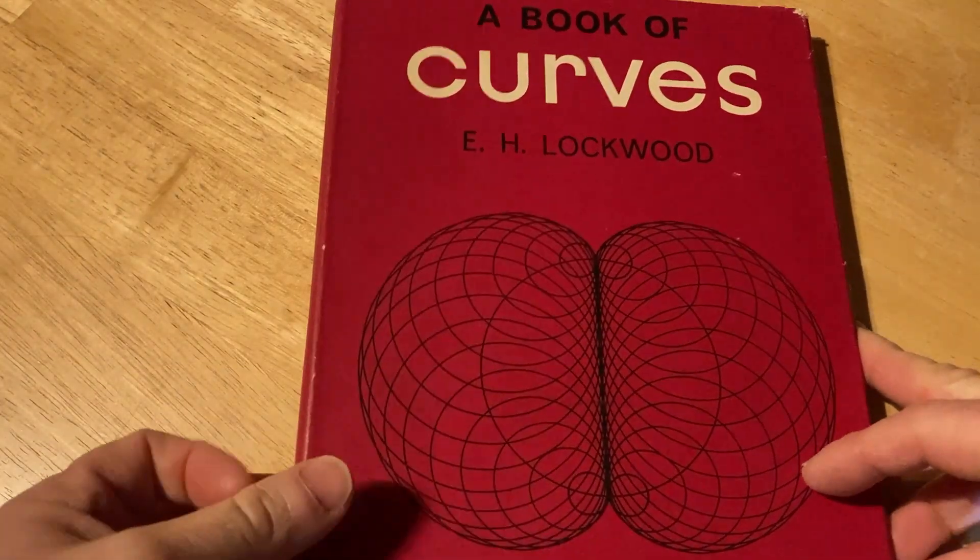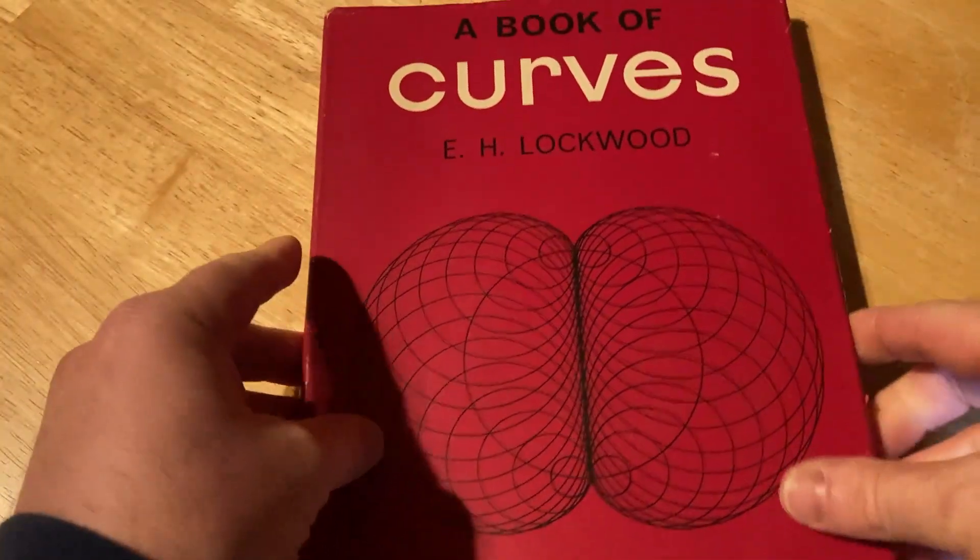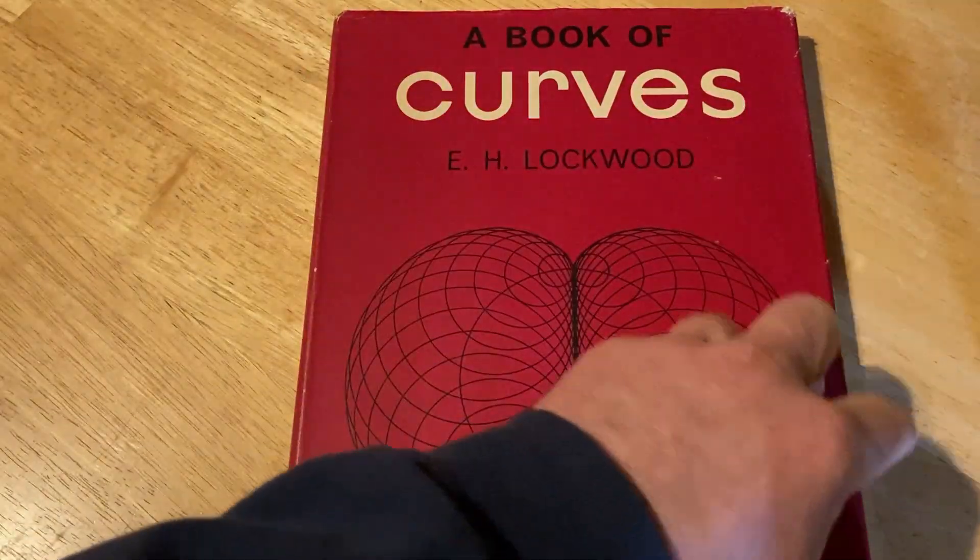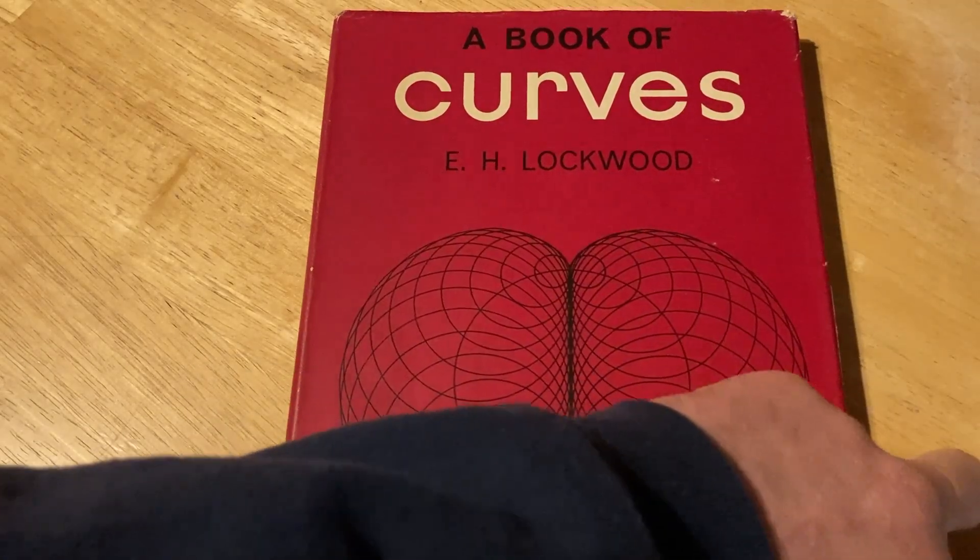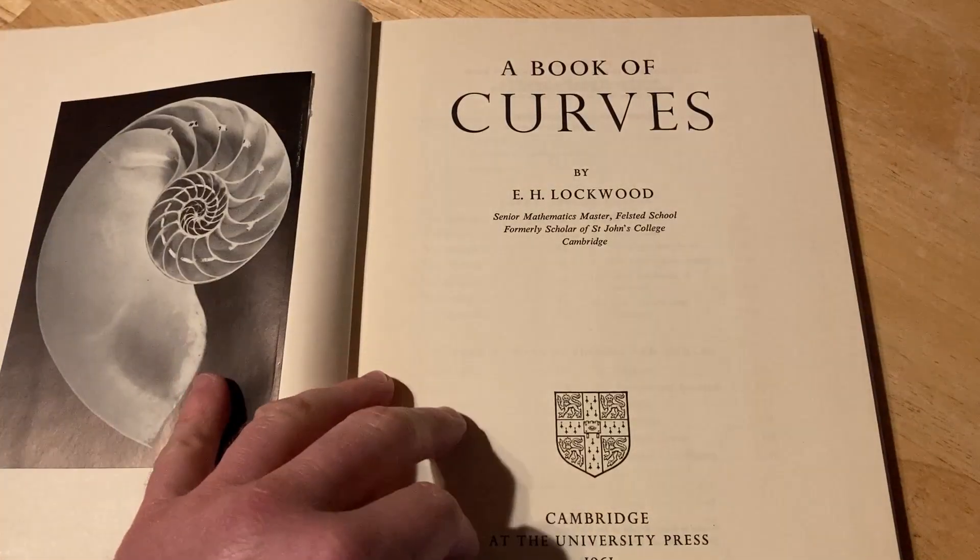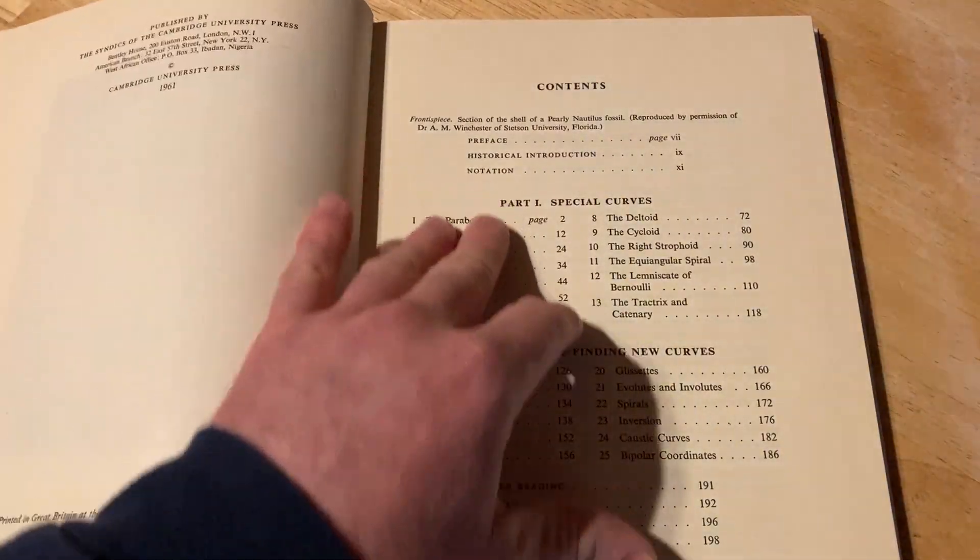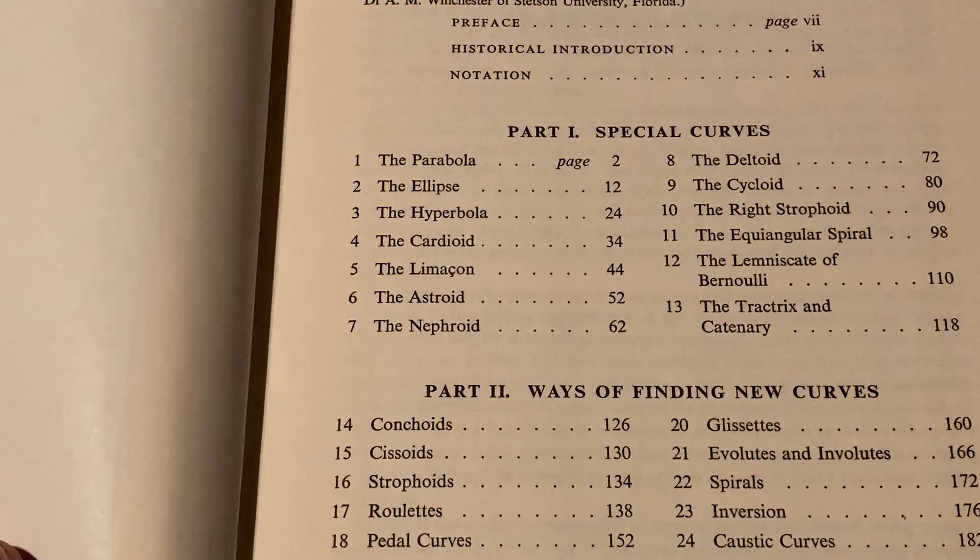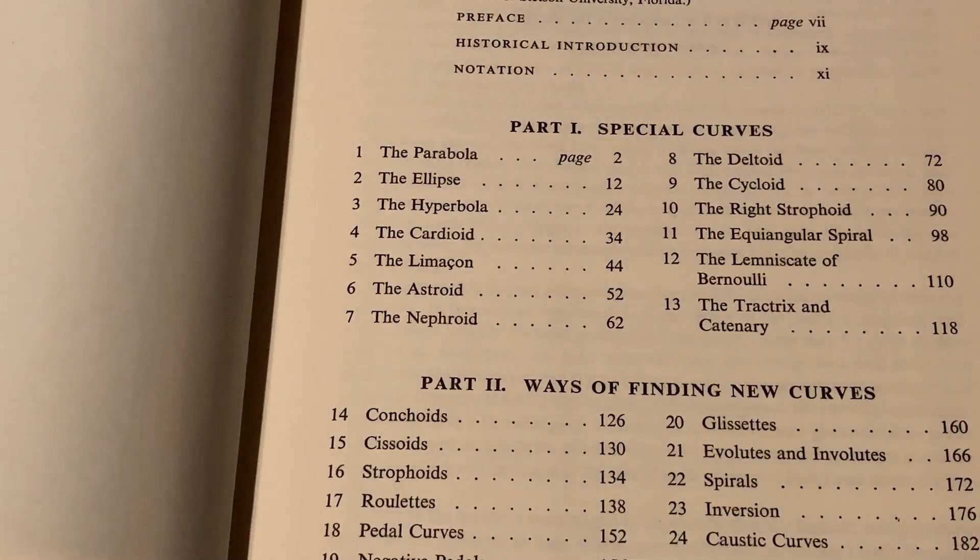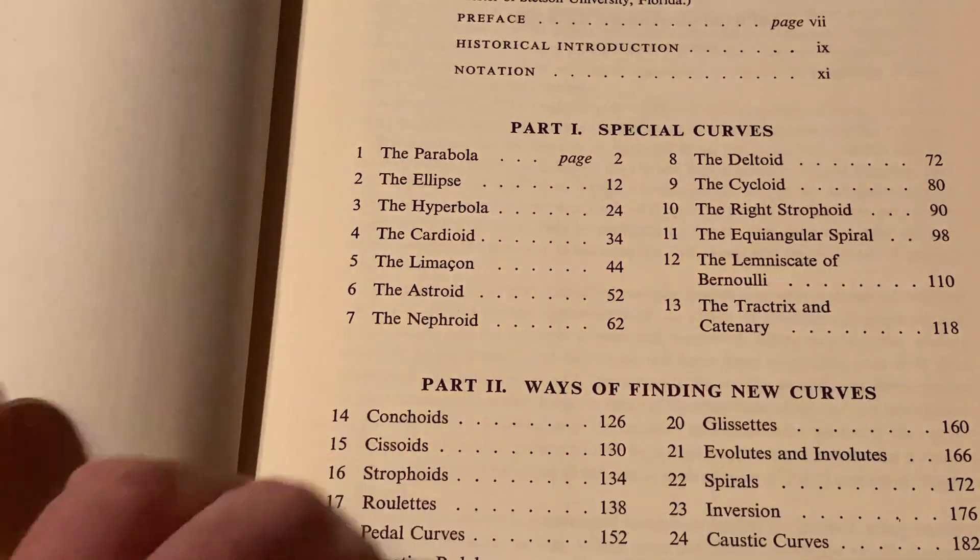A Book of Curves by E. H. Lockwood, Cambridge University Press. This one still has the dust jacket. Someone left a comment, and it's been a while, and they asked me about this book. And I meant to reply, and I forgot to reply. So hopefully they watched this video. Maybe I can find the comment and reply. A Book of Curves. Because I had talked about this book before, but I never showed it. Special Curves, it talks about all these special curves. The parabola, the ellipse, the hyperbola, the cardioid, the limacon, the asteroid, the nephroid, the deltoid, the cycloid. The right strophoid.